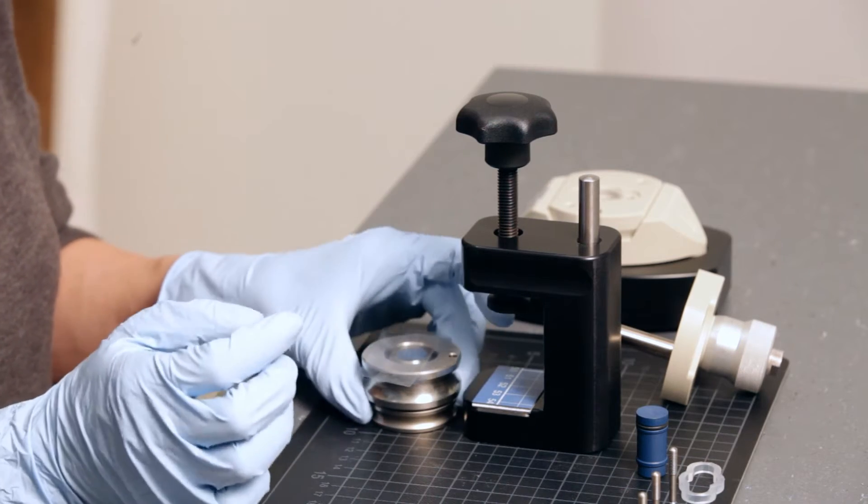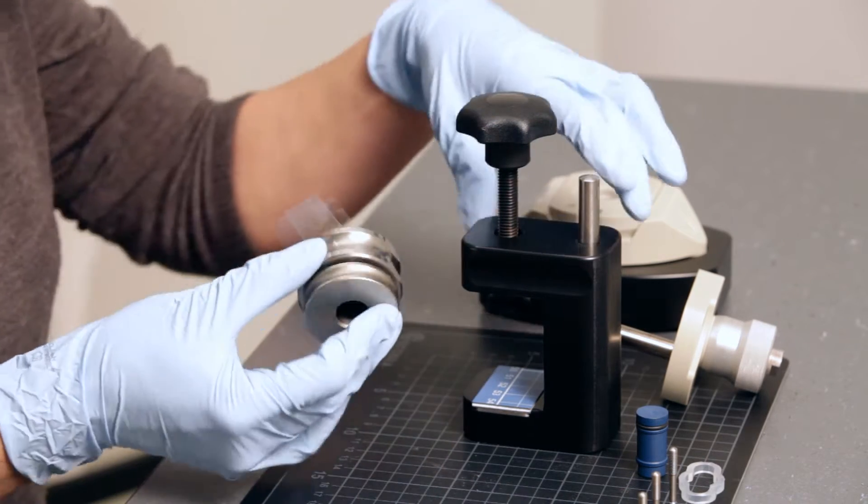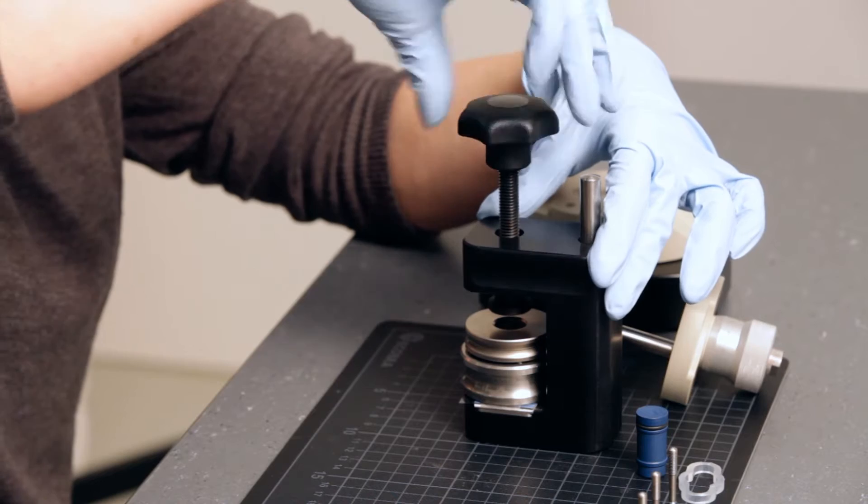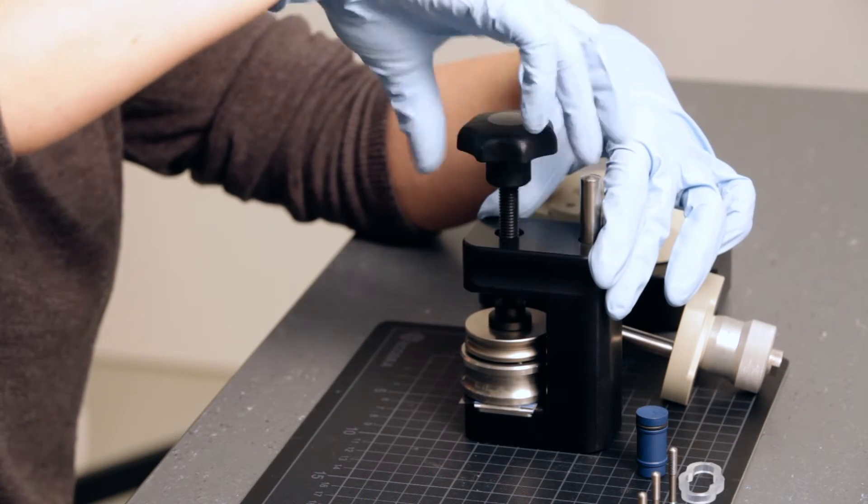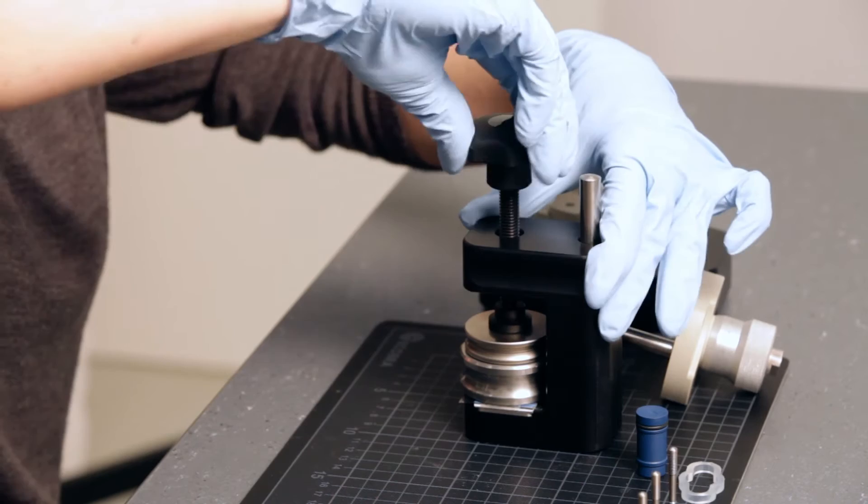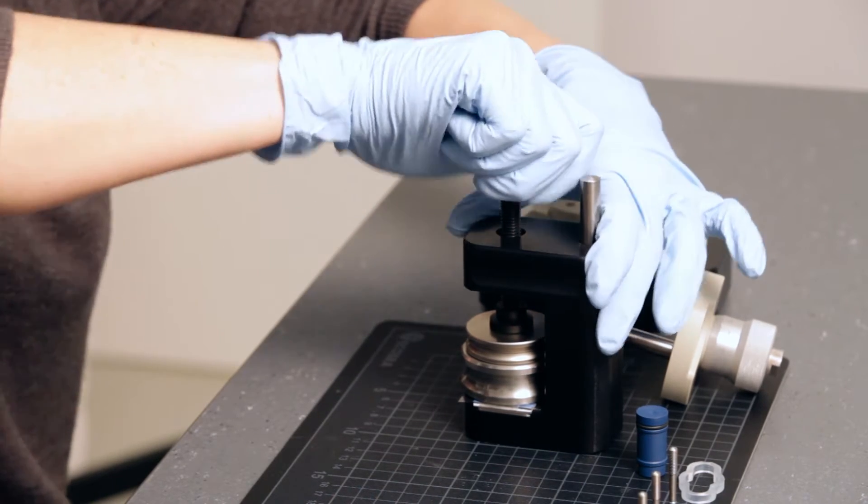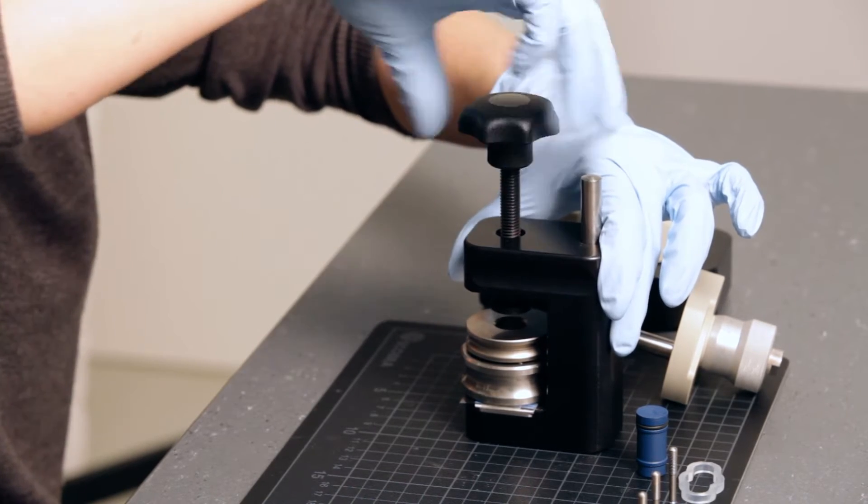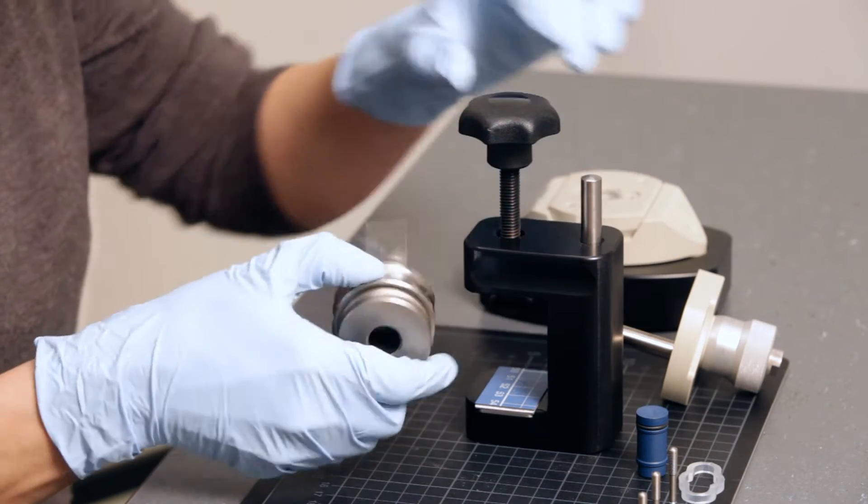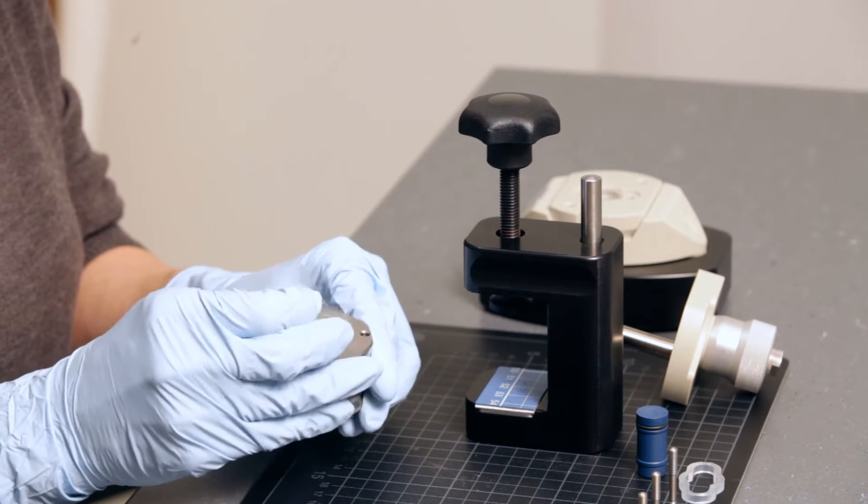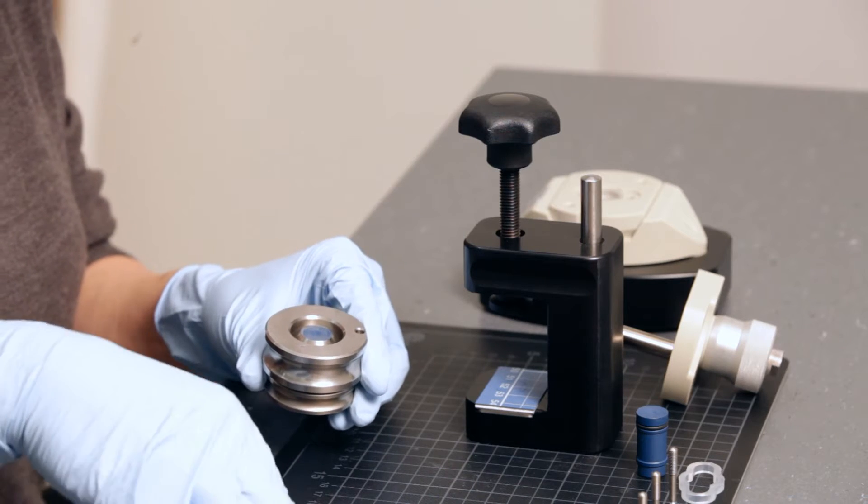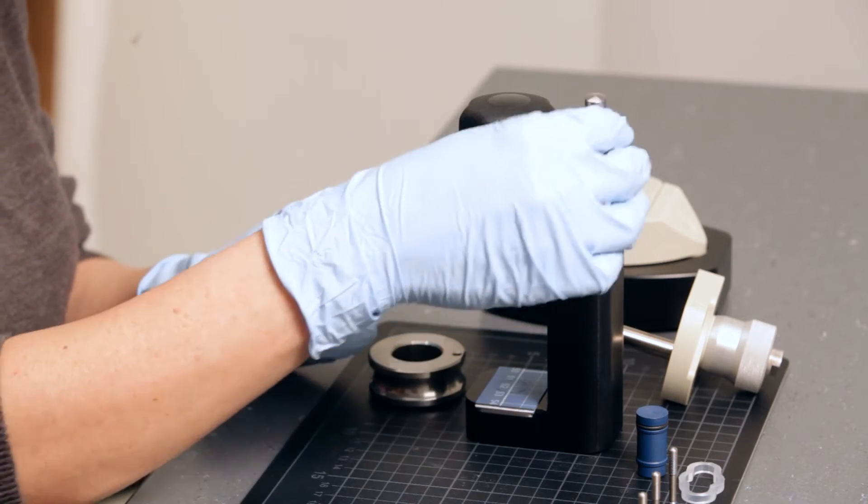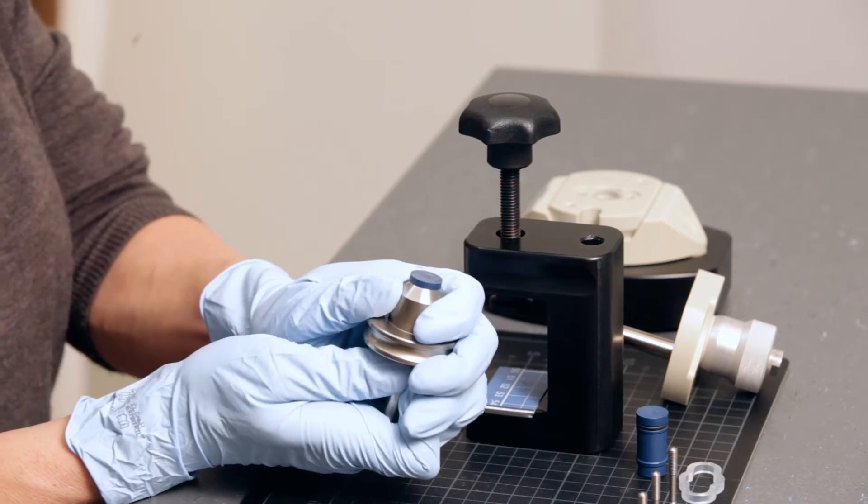Place the puncher with the sample holder and sample in the punching tool. Tighten the knob of the punching tool completely. Remove the puncher with the sample holder and the excess adhesive tape and sample. Use the metal bar to push the sample holder out of the puncher.